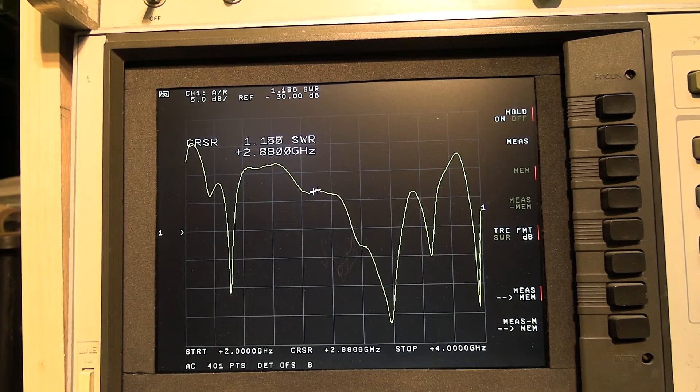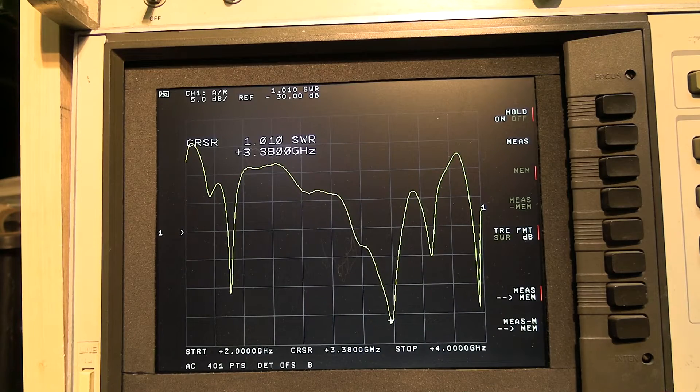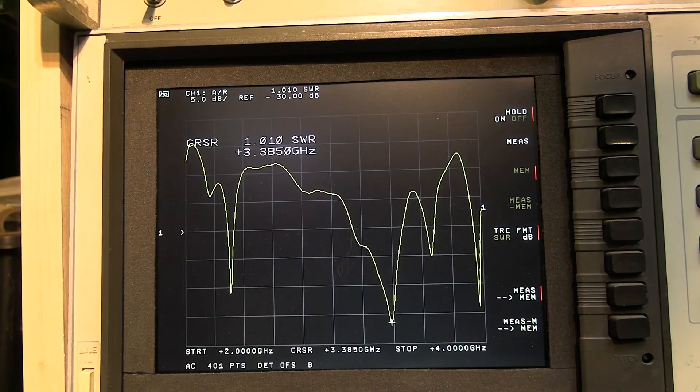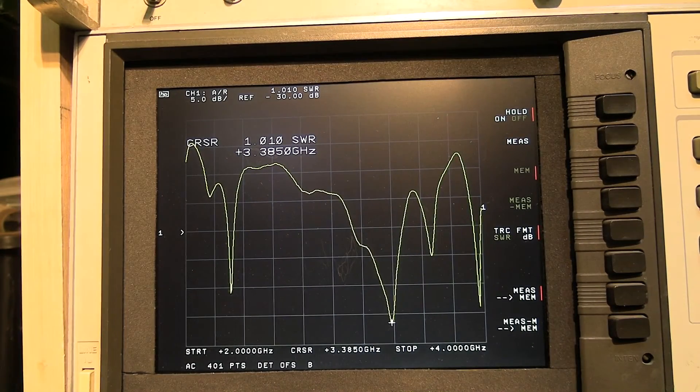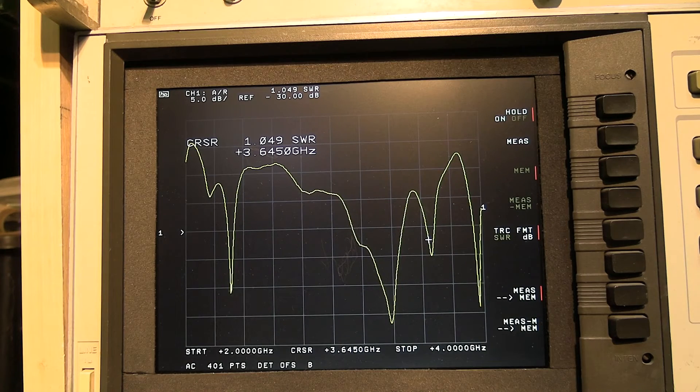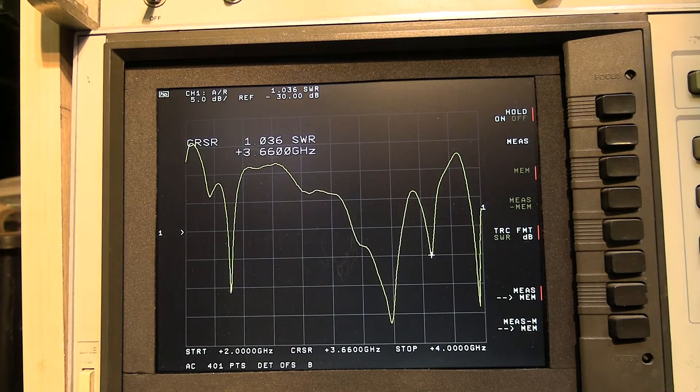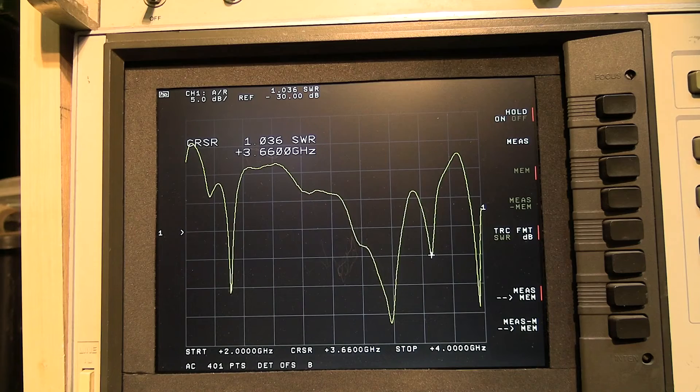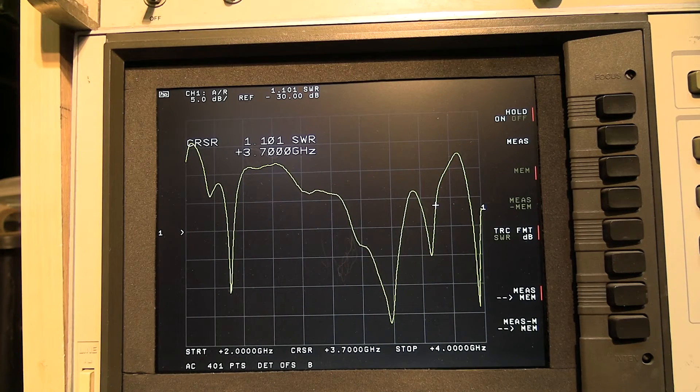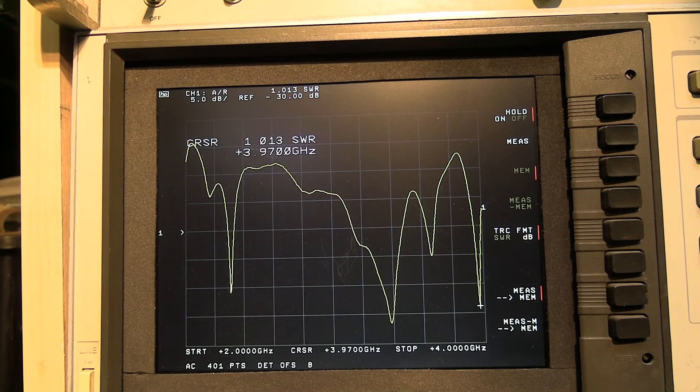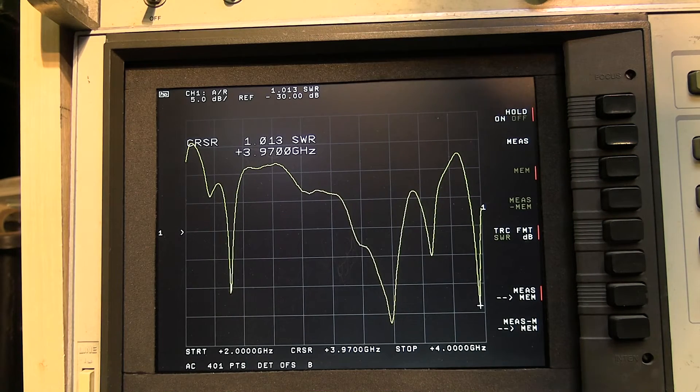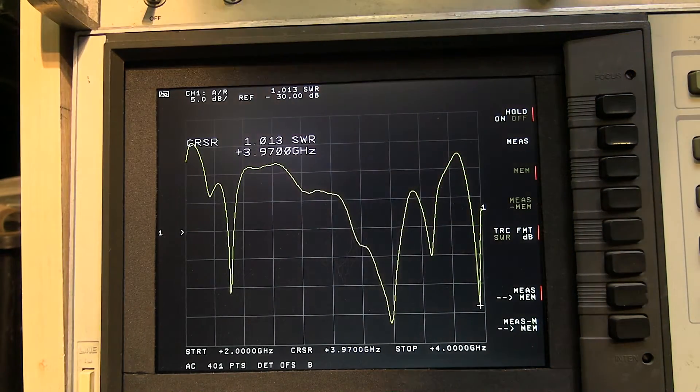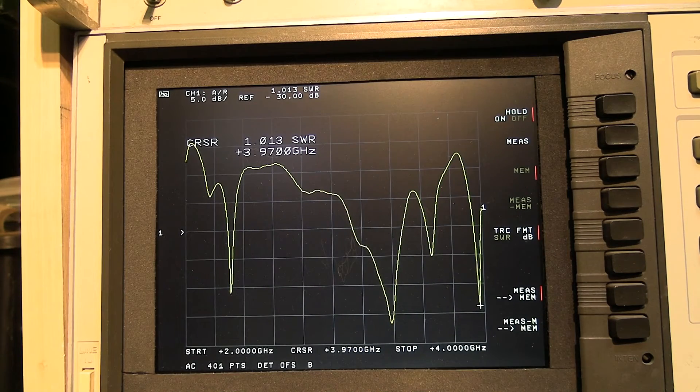We get this second really nice response down here, really low return loss at 3.3 gigahertz. That's going into the 5G spectrum, that's a pretty nice return loss there. We've got another one at 3.6 gigahertz, again in the 3 gigahertz frequency for 5G, at least here in the UK. I think Vodafone uses a frequency around there. Then we get another response right at the top here at 3.97 gigahertz, again a quite respectable return loss. We're hitting some points between 2 gigahertz and 4 gigahertz. That's not bad at all, a lot better than those lower frequencies below 2 gigahertz.